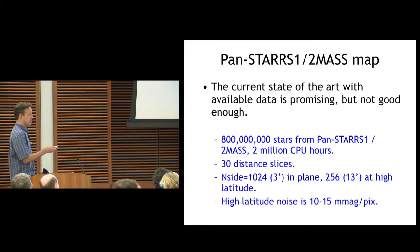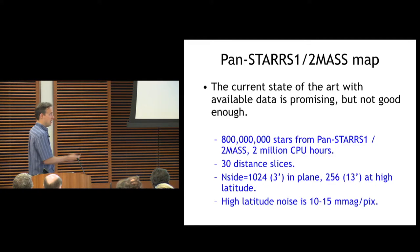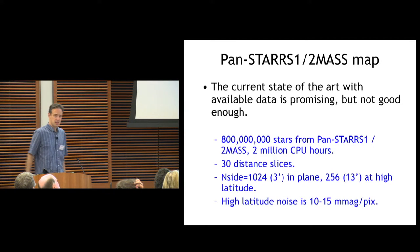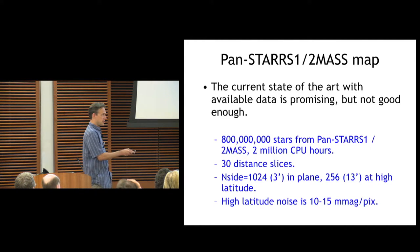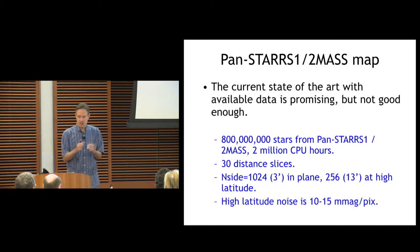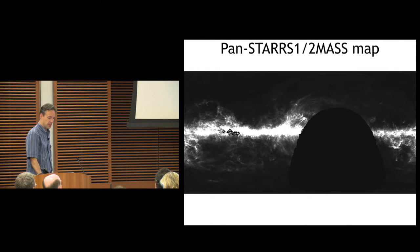We do this with about 800 million stars. We use Two MASS also when we can, if the stars are bright enough in JHK. We have about 30 distance slices. We're trying to do a lot more, but this is both a computational problem and just the signal-to-noise of the data limits us. For resolution, we're doing HEALPix, about 1024 in the plane and 256 at high latitude. So think three arc minutes to 13 arc minutes. And as for noise at high latitude in these bigger pixels, we get something like 10 to 15 millimags RMS uncertainty in the reddening. SFD, by the way, is about twice that good in pixels that are half the size. So something like four times as good statistically.